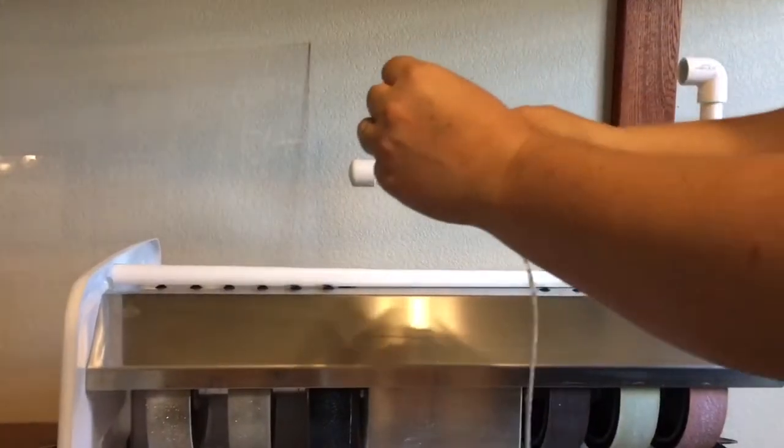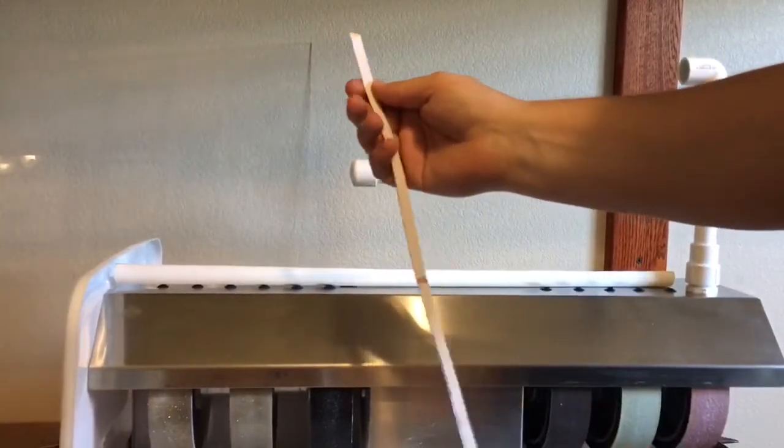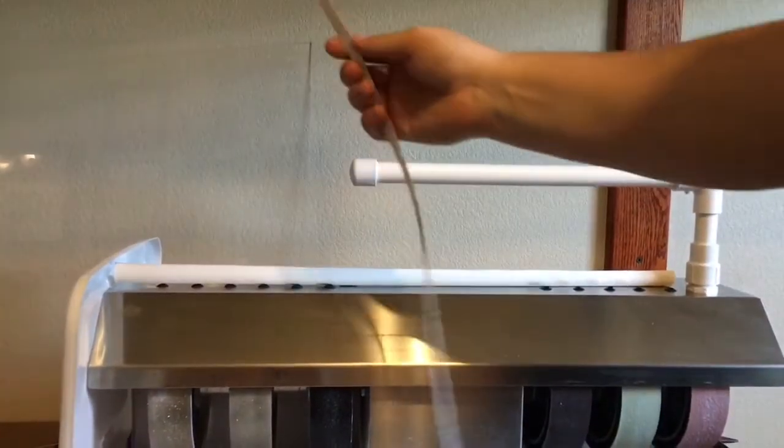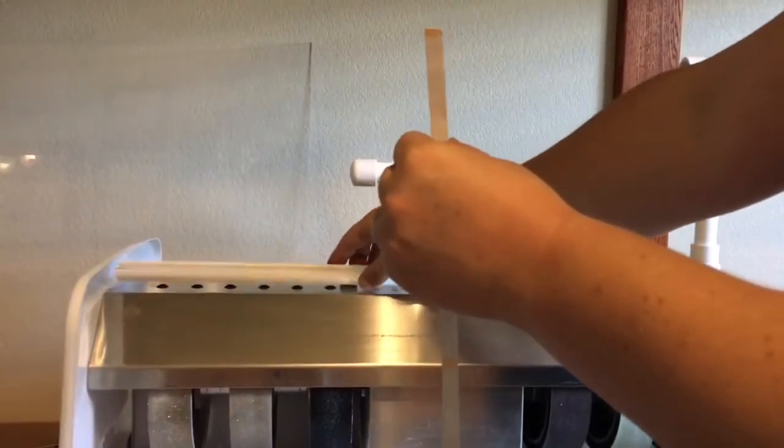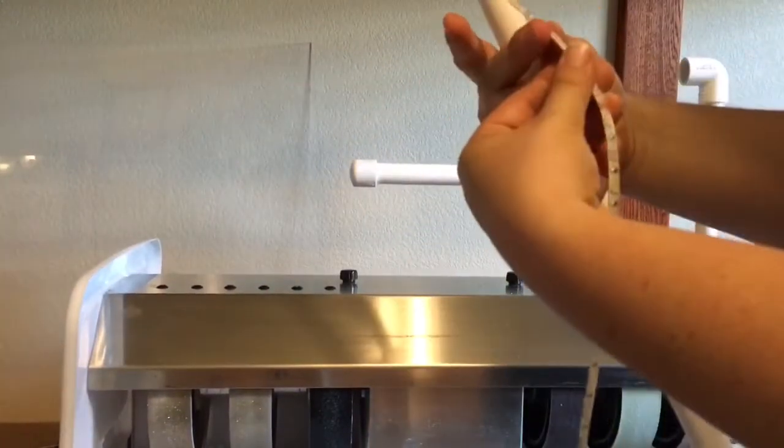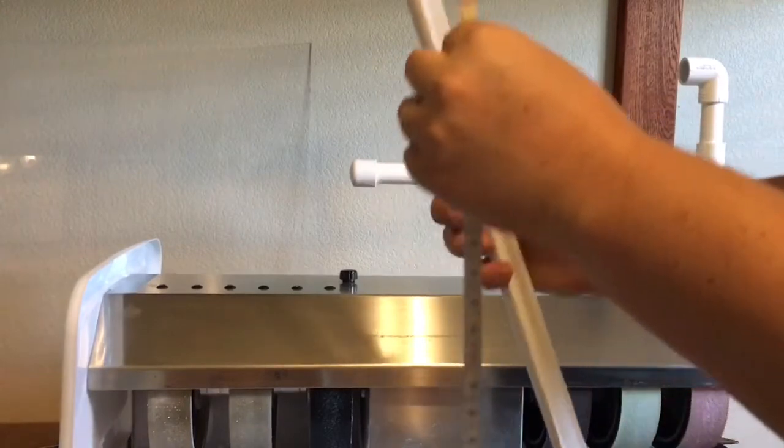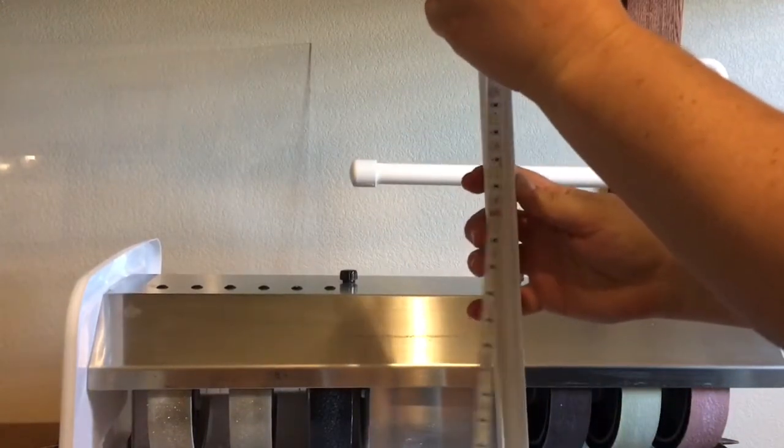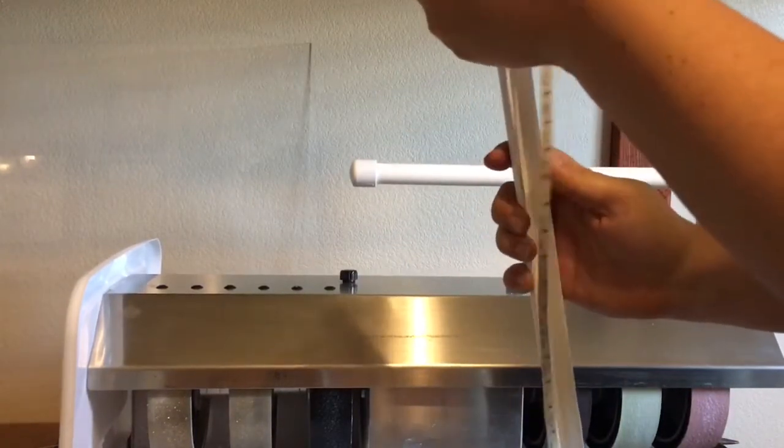So now I'm ready to peel my tape strip off. And be careful not to touch it. You want to make sure it just touches the inside of your PVC tubing. This is all smoothed out and clean. I'm going to put it all the way up until the end.